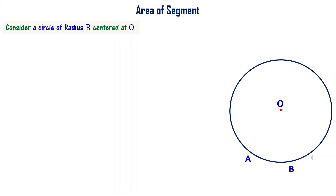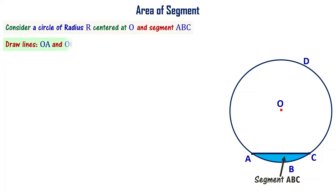Now let's understand about the area of a segment. Let us consider a circle of radius r centered at O, and segment ABC as shown in the figure. Draw lines OA and OC. O, A, B, C forms a sector. The sector OABC subtends an angle theta at the center, and OABC is a minor sector.